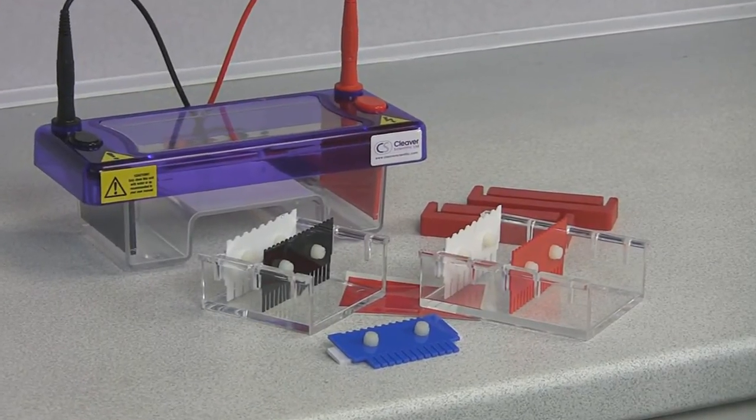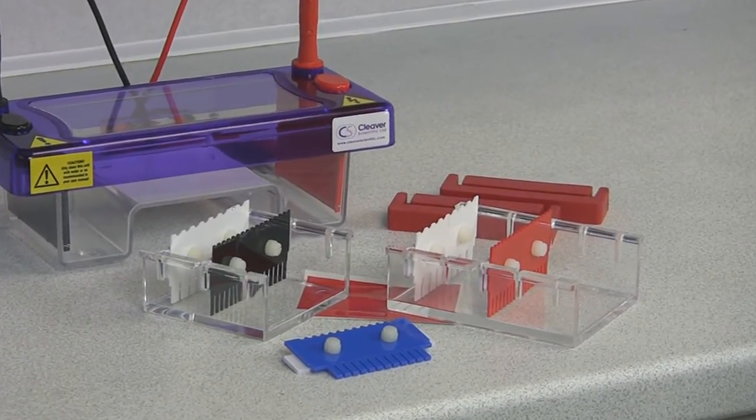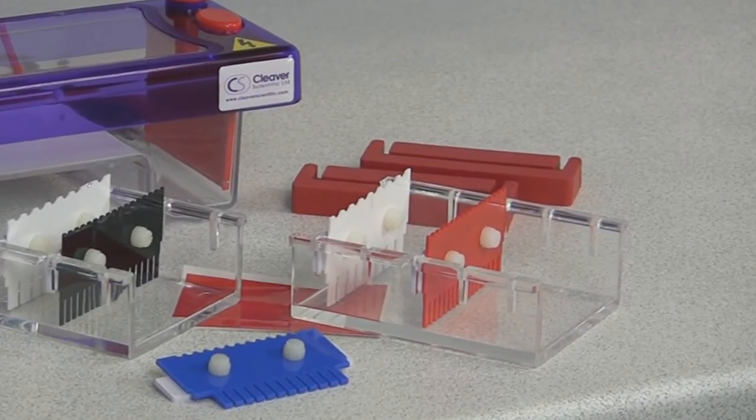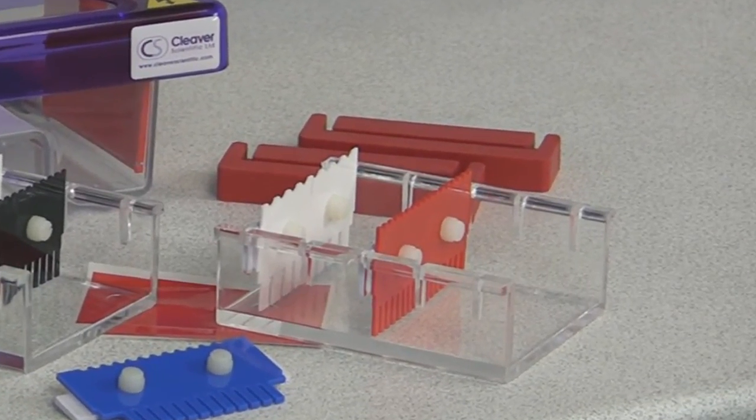Two removable UV transparent gel trays eliminate the need for additional gel tanks or changes in application, saving bench space, time and money.